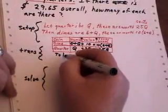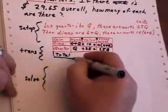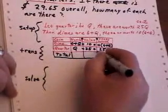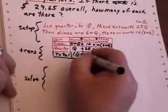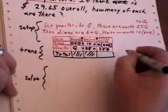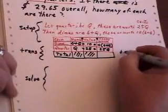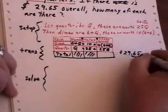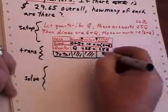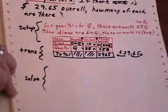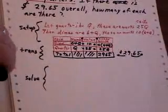Now we have a total here. We don't know the total number of coins, but we do know the total number of cents. Remember there's $29.65. Let's move the decimal two to the right. This gives us 2965 cents there.